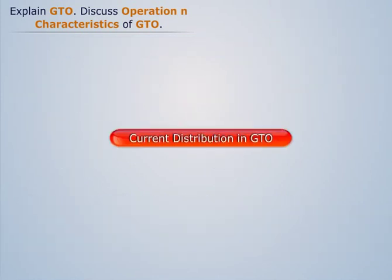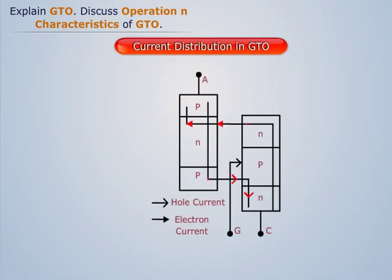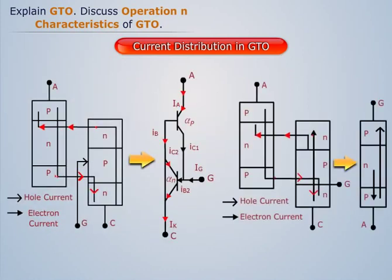Now let us discuss current distribution in GTO. The PNPN structure of a GTO consists of one PNP and one NPN transistor connected in regenerative configuration. The current flow directions during turn-on and turn-off are represented in the diagram.